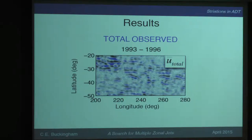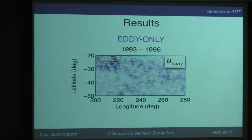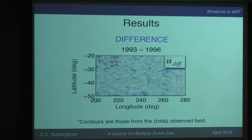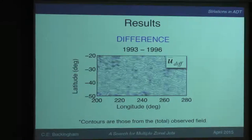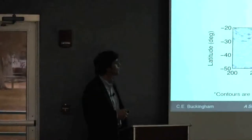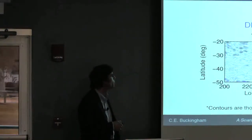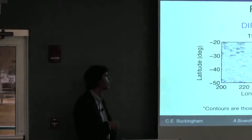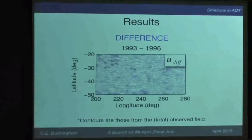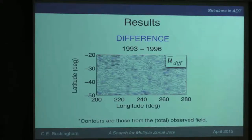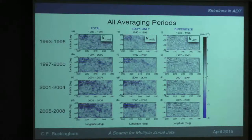Here's the result for 1993 to 1996. The total observed would be something similar to what Maximenko would observe. The eddy-only shows the contribution due to the eddies we've identified, and then there's the difference — with contours from the total observed field. There is some energy not attributed to the eddies, though the alternative hypothesis is that our algorithm fails to identify some of that energy. There is some structure correlated with the total observed striations — a relationship between eddies and striations, as well as whatever's left over.